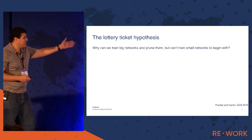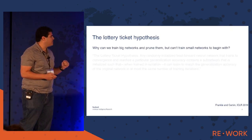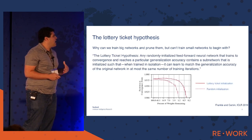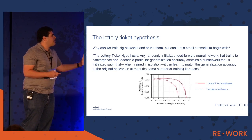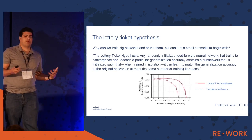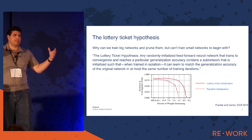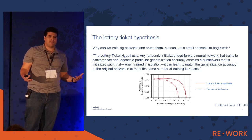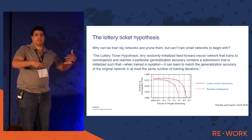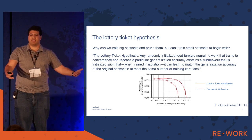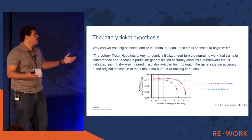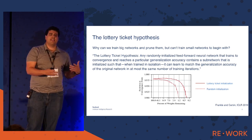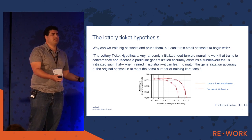The lottery ticket hypothesis is trying to answer this question: why is it that we can train these big networks and prune them down with minimal loss in accuracy, but we often can't train these small networks to begin with? The answer is that if you have the right starting point, the right initialization, then it turns out that you can do this.